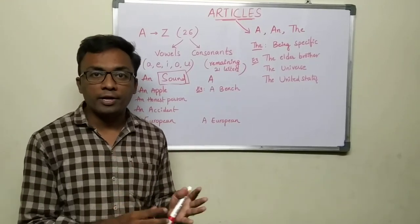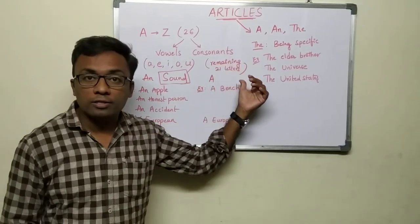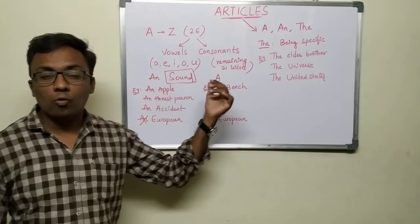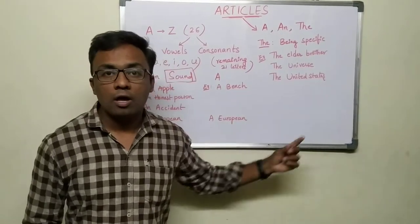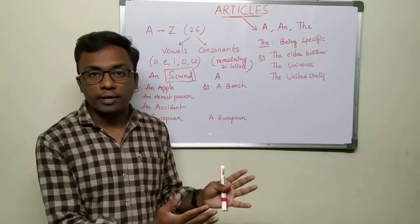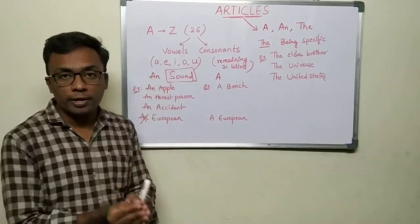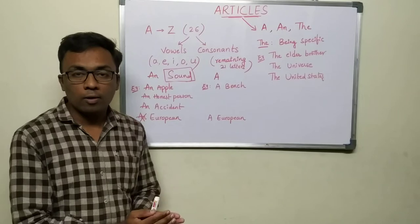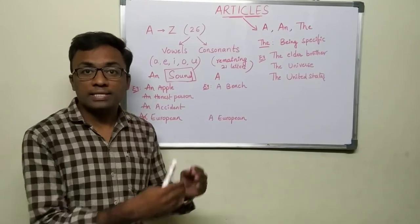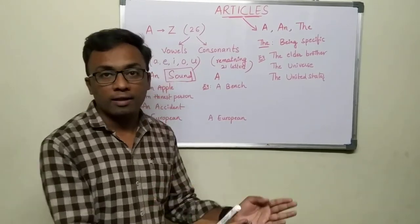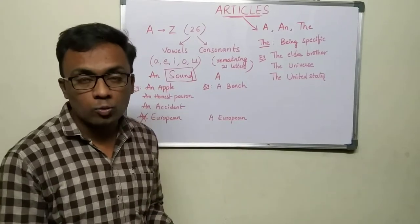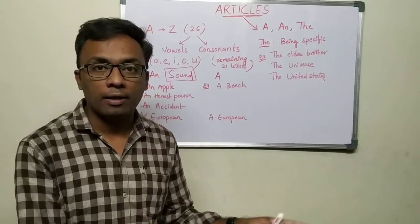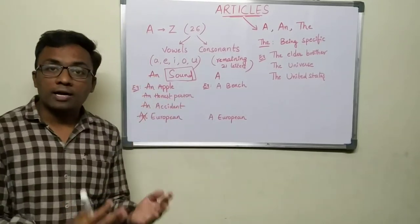We all know that English has 26 alphabets, which are divided into vowel sounds and consonant sounds. Everyone knows the five vowels: A, E, I, O, U, and the remaining 21 letters are consonants. The whole logic is here: whatever word starts with a vowel sound will be preceded by the article 'an.'